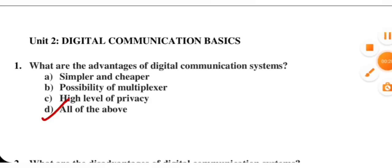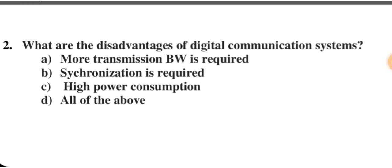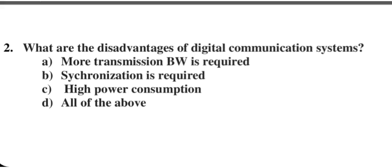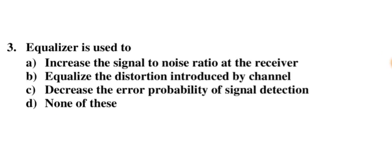Second question: What are the disadvantages of a digital communication system? More transmission bandwidth is required — yes. Synchronization is required — yes, when we do coherent detection we need synchronization at the transmitter and receiver end using the same carrier. High power consumption — yes. All three apply, so D is the right option.